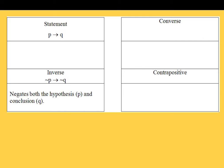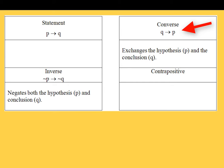Next is the inverse. For the inverse, symbolically we're going to negate both the hypothesis and the conclusion: we take p and make it not p. So it reads 'not p implies not q.' The converse is where you take the hypothesis and the conclusion and flip them — switch or exchange them. The end becomes the beginning and the beginning becomes the end.